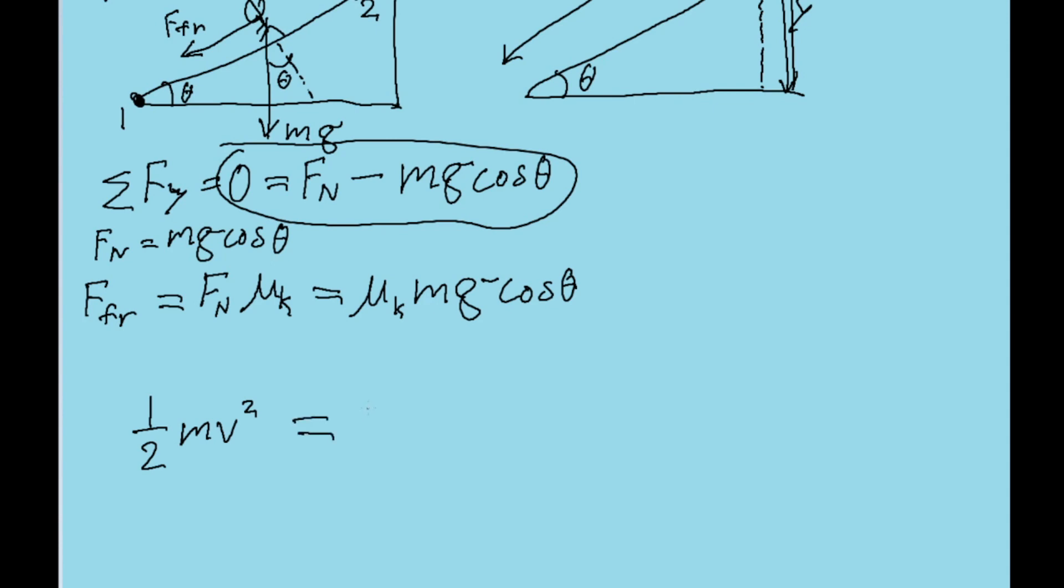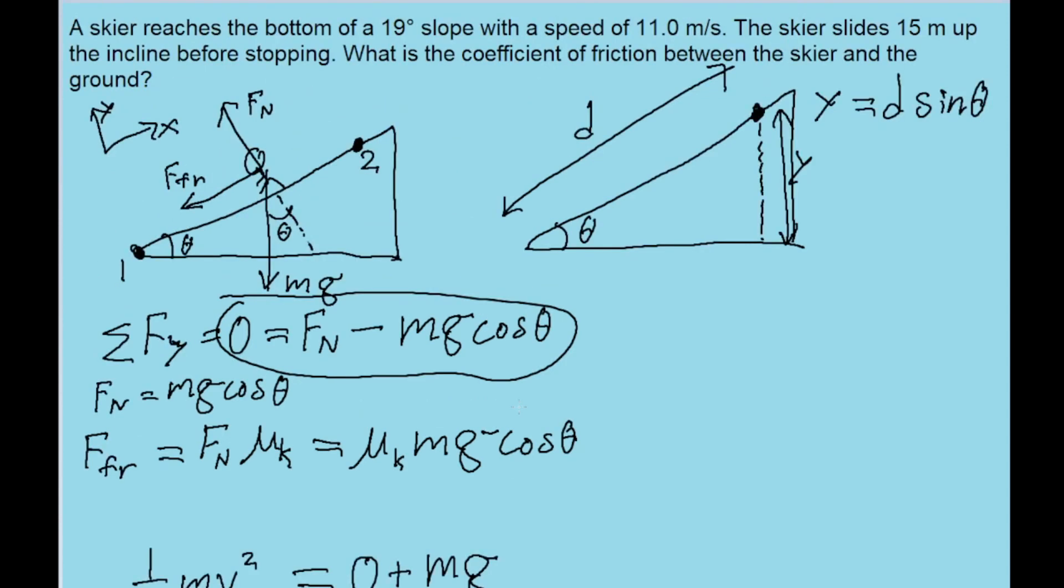At point 2, it's at rest, so there is no kinetic energy, but now that its height has changed, it has gained some potential energy. And potential energy is defined as mass times g times the height of the skier at that point, which I defined earlier to be y, and therefore can be better written as d times the sine of theta.